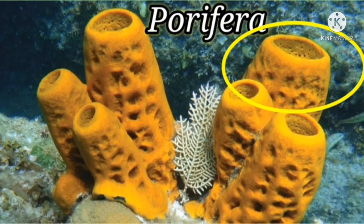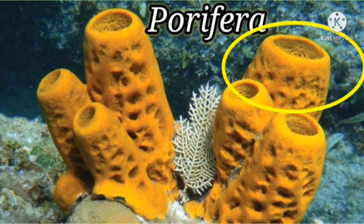They have a cellular grade of organization — that means the body is made of cells. The body is perforated with many pores called ostia. Water enters the body through ostia and leads to a canal system, which circulates water throughout the body and carries food and oxygen. The body wall contains spicules — that is the skeletal framework. Reproduction is by asexual or sexual methods. Asexual means without fusion of male and female gametes; sexual means fusion of male and female gametes.